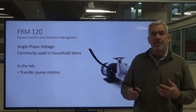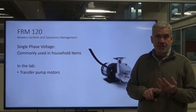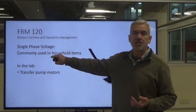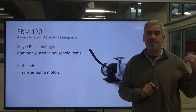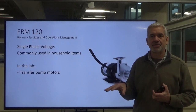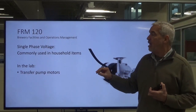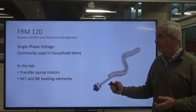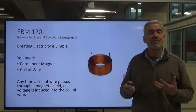There are two types of voltages we use in brewing systems: single-phase and three-phase. We'll talk about single-phase first, which is most commonly used in our homes. There is no three-phase unless you have a special application, like a shop with large equipment. Inside your actual dwelling, you're going to have single-phase voltage. In the lab, we use single-phase voltage for our transfer pumps, heating elements, grain mill, and things like that.